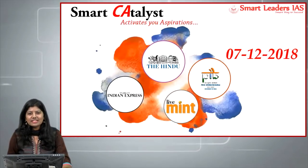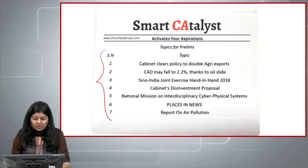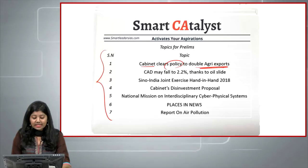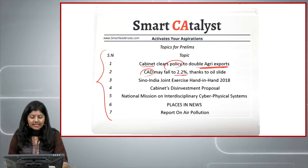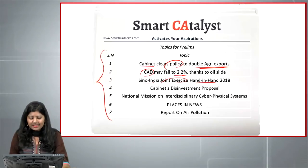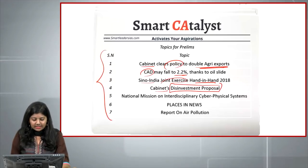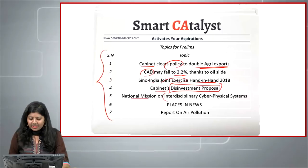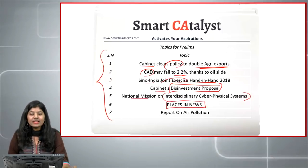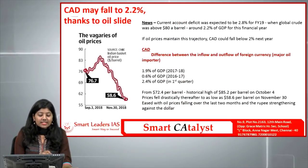Welcome to Smart Catalyst, December 7, 2018. Today we are going to cover all these prelims articles: cabinet clears the policy to double agri exports, current account deficit may fall to 2.2 percent, Sino-India joint exercise Hand in Hand, cabinet's disinvestment proposal, national mission on interdisciplinary cyber physical system, places in recent news, and report on air pollution.